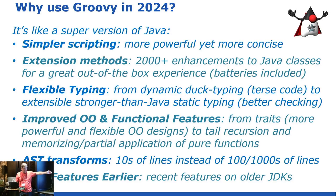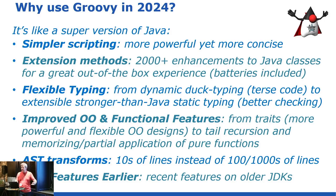There's a whole stack of 80 or more AST transforms that mean instead of having thousands of lines of Java code, you might have tens of lines of code. And if you're getting features from Java 21, 22, 23, you can probably get the exact same equivalent feature — often with the exact same syntax Java's offering in later versions — back in JDK 8 with Groovy if you want.